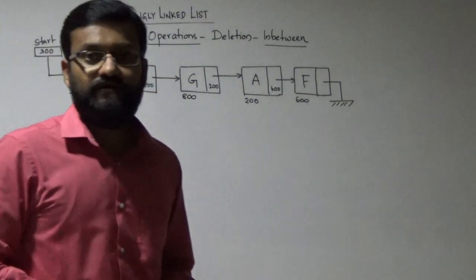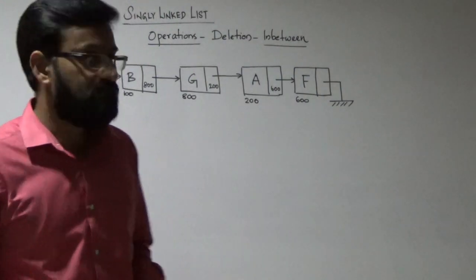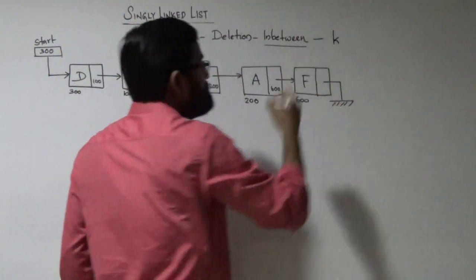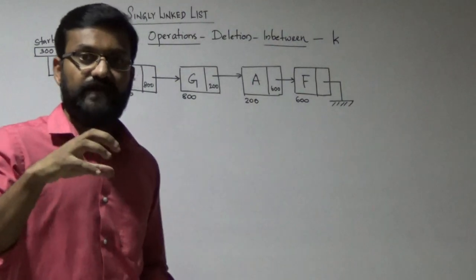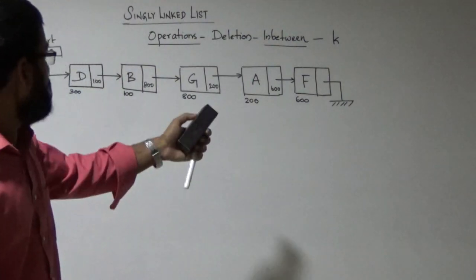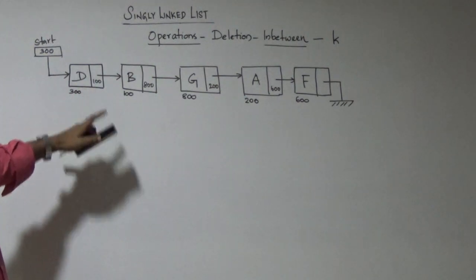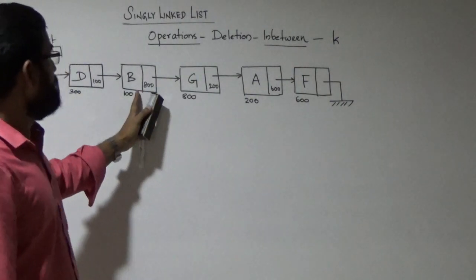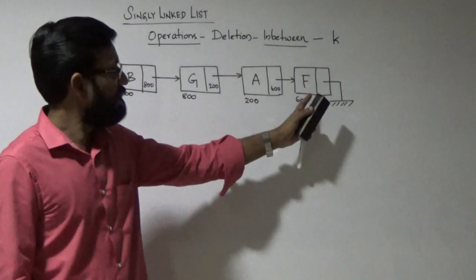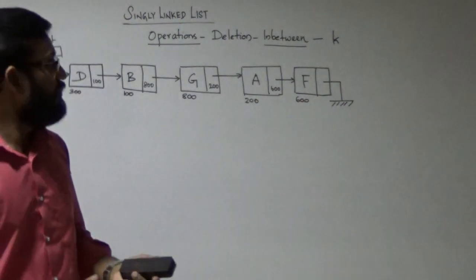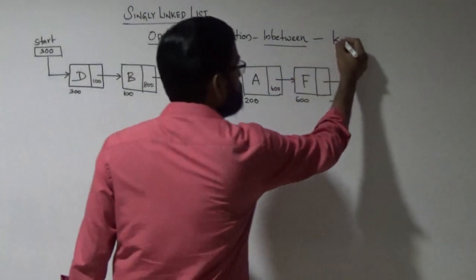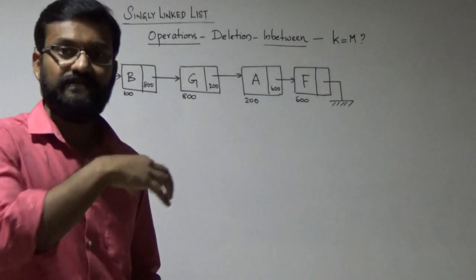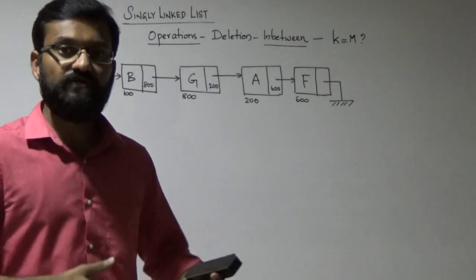We are going to look at deletion of a node in between in a singly linked list. This algorithm receives a parameter k, which represents the key value of the node to be deleted. For example, if k equals d, that node will be deleted; if k equals a, b, or f, those respective nodes are deleted. If k equals m and m is not present, the node to be deleted is not in the list, so you have to address all these cases.